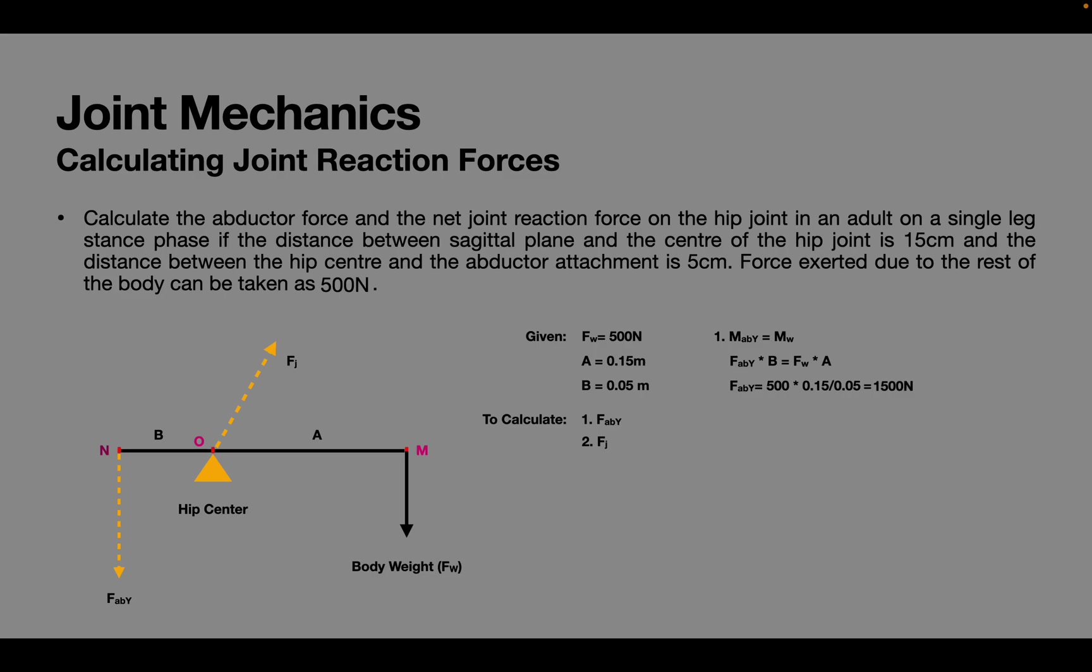Coming to the second part of the problem. If we add force due to body weight and force generated by the abductors we get the vertical joint reaction force and it is 2000 N.